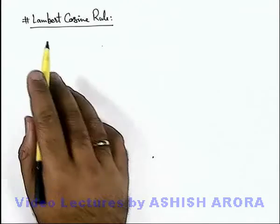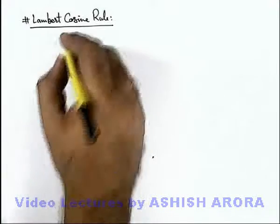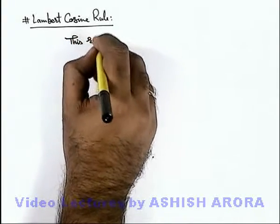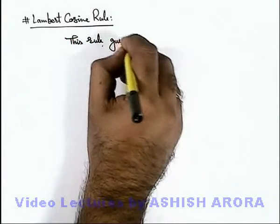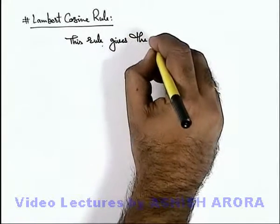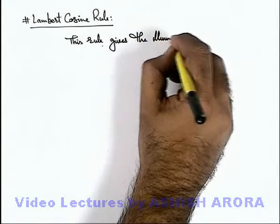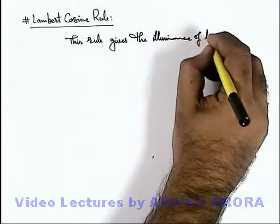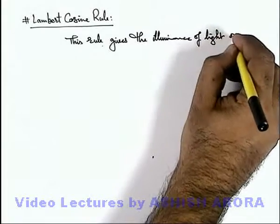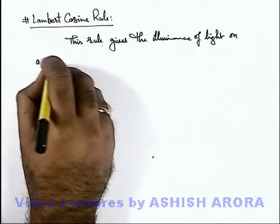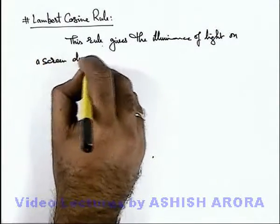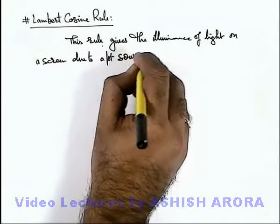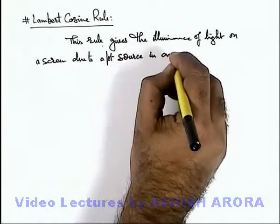Let us now understand Lambert's Cosine Rule. This rule gives the illuminance of light on a screen due to a point source in any direction.